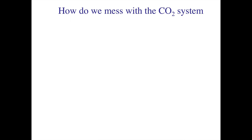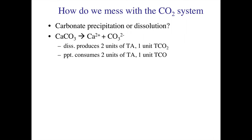Physically, we can precipitate or dissolve carbonate. If we dissolve calcium carbonate, we produce carbonate ions. Carbonate ions will produce two units of alkalinity and one unit of total CO2. So if you dissolve calcium carbonate, you add two units of alkalinity — because total alkalinity is defined as carbonate concentration times two — but only one unit of total CO2. Conversely, precipitation consumes two units of alkalinity and only one unit of total CO2.